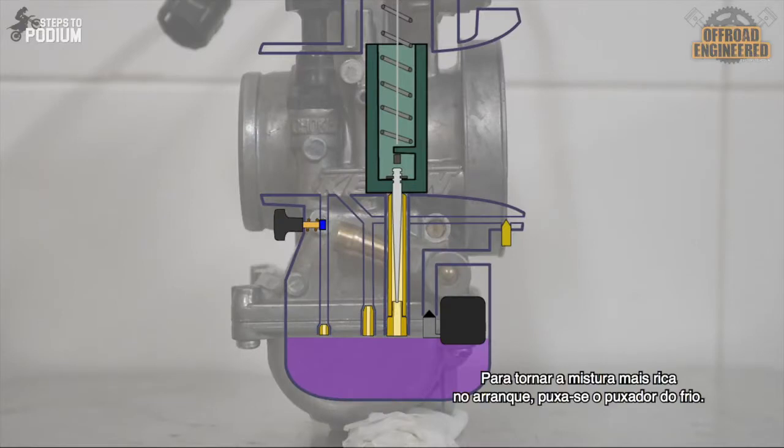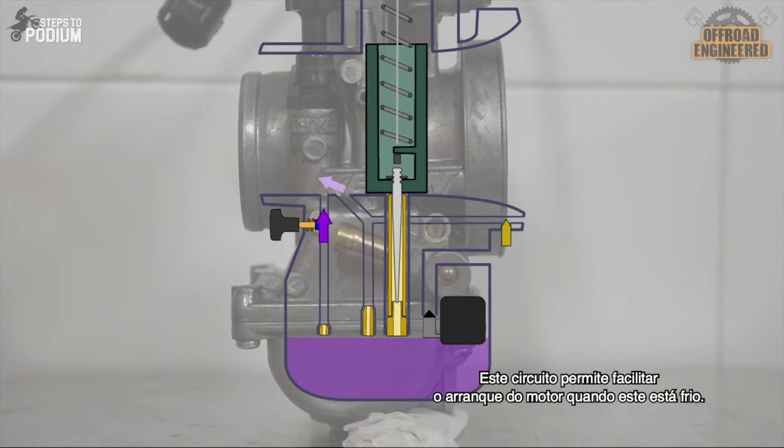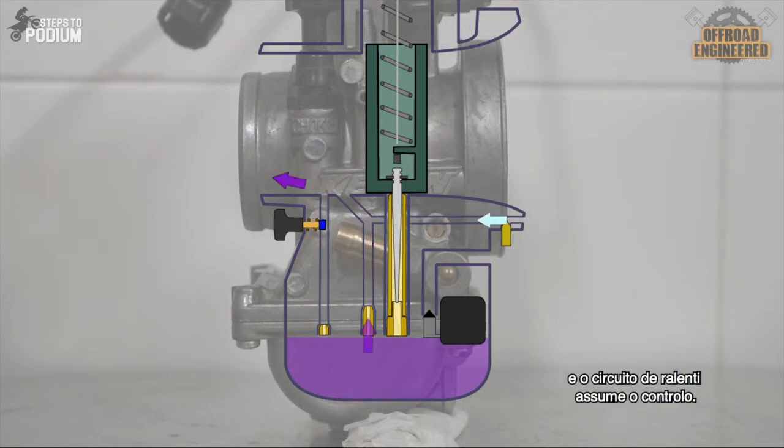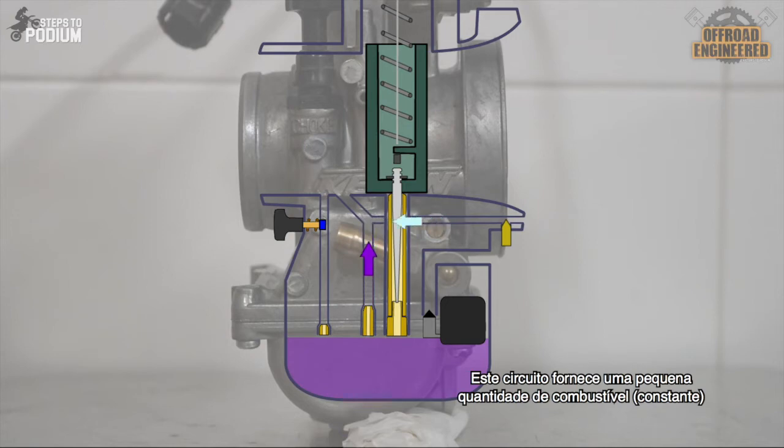To reach in the mixture on startup, we pull the choke, which provides additional fuel to make it easier for the engine to start when it's cold. Once the engine starts, the choke closes and the idle circuit kicks in. This circuit provides a small but steady amount of fuel whenever the engine is running on idle and a little over idle, through the pilot jet.